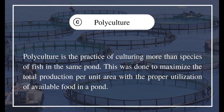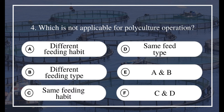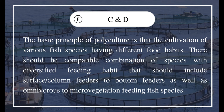Question 4: Which is NOT applicable for polyculture operation? A) Different feeding habit, B) Different feed type, C) Same feeding habit, D) Same feed type, E) A and B, F) C and D. The answer is F) C and D — same feeding habit and same feed type. The basic principle of polyculture is cultivation of various fish species having different food habits, with a compatible combination including surface/column feeders to bottom feeders, as well as omnivorous to micro-vegetation feeding fish species.